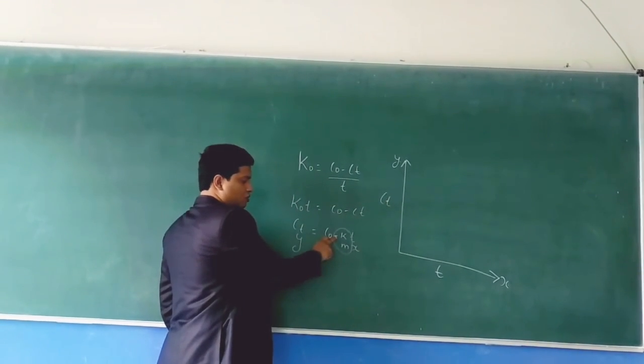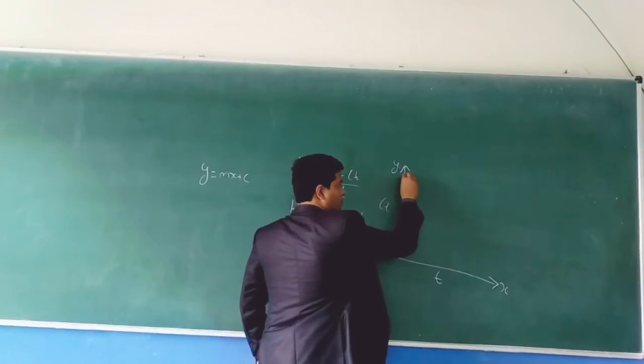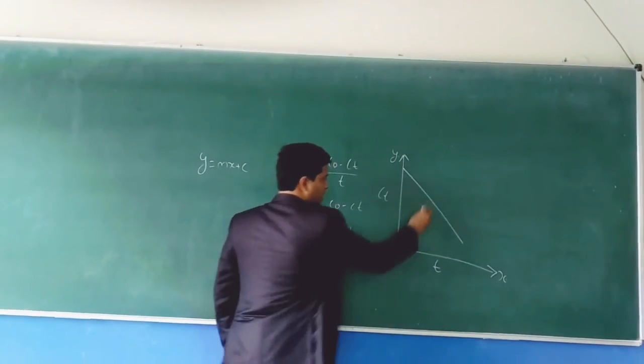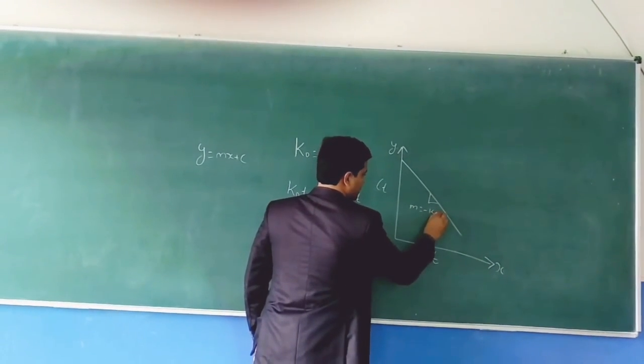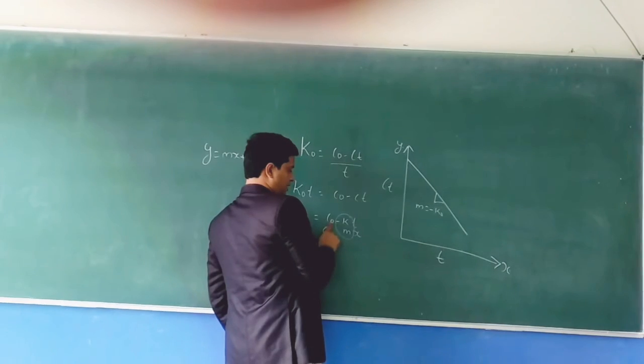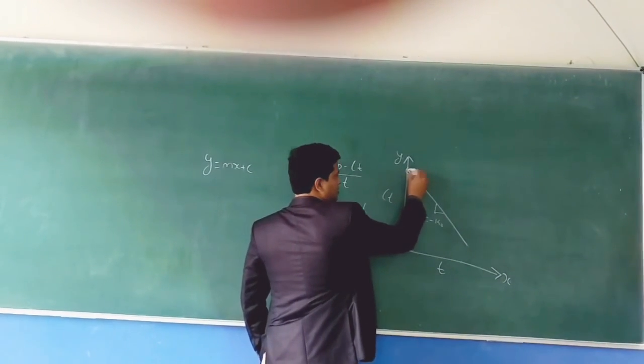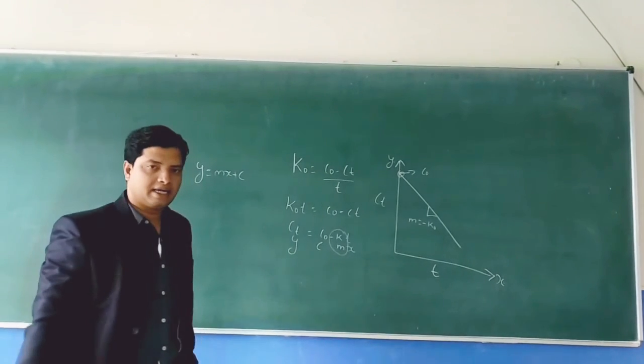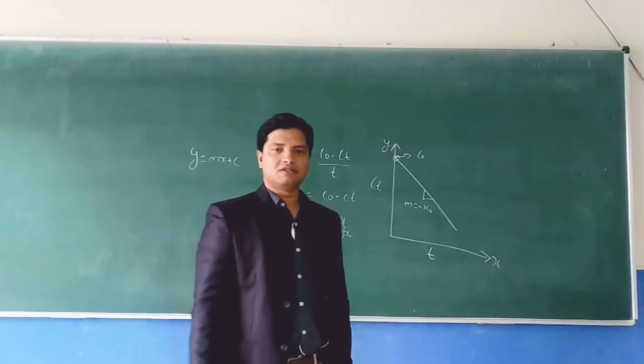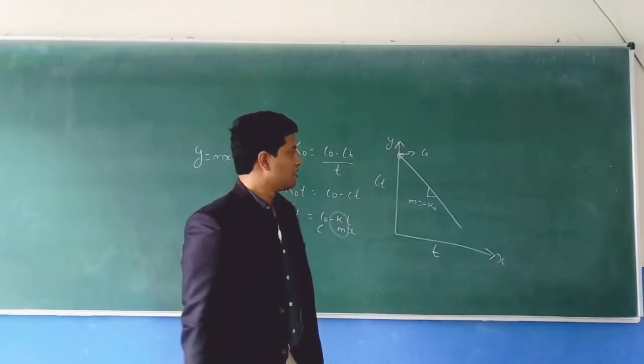As the slope is negative, your graph will start from here with a negative slope. The slope will be minus k naught and your y-intercept is C naught. This is how you draw this graph.